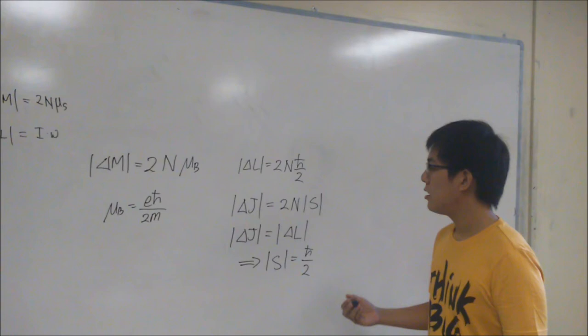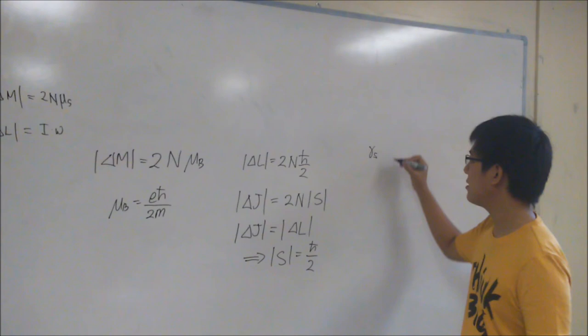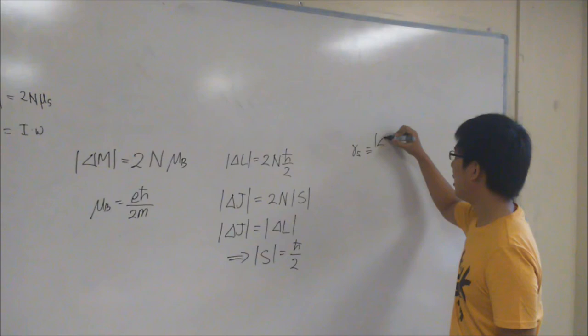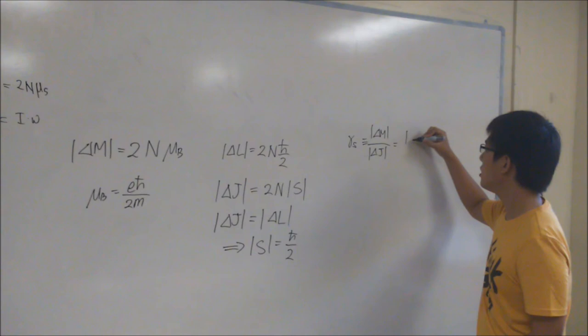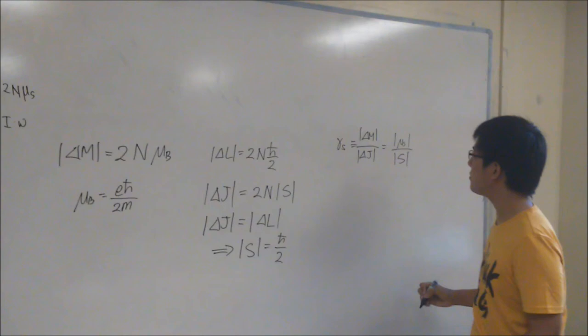Now, if we define the gyromagnetic ratio gamma S to be delta M divided by delta J, we have the following results: mu S divided by S.